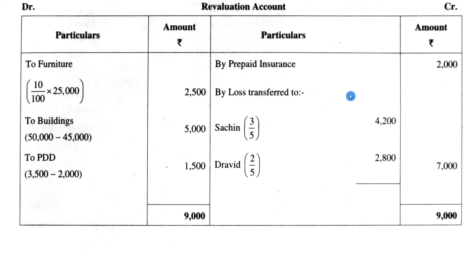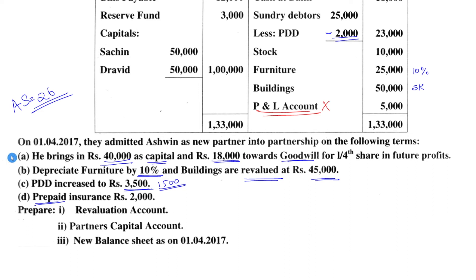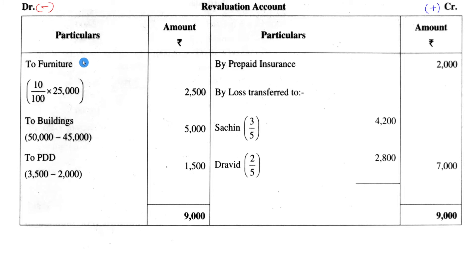We'll start with the revaluation account. Write all the basic format necessities. You can start with either the debit or credit side. The trick for revaluation account: entries that give income to the company are recorded on the credit side, and entries that are expenses or losses for the company are recorded on the debit side. We'll neglect the first adjustment for now and move to depreciation on furniture.